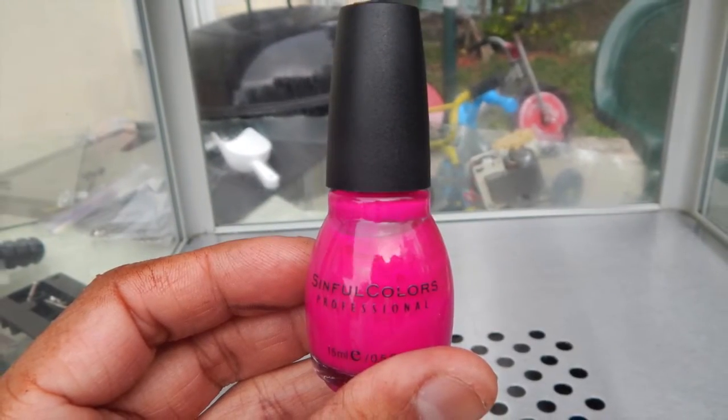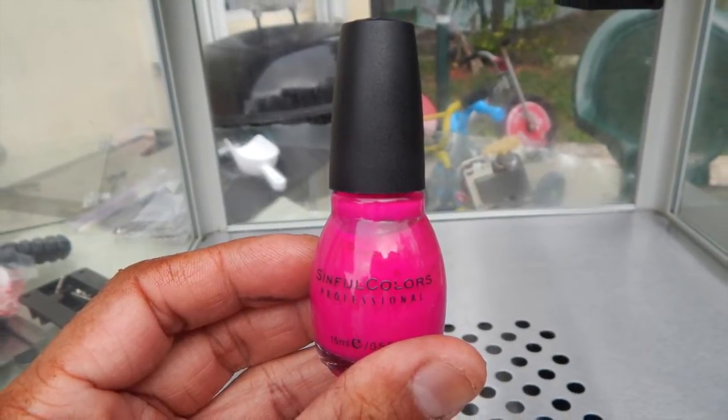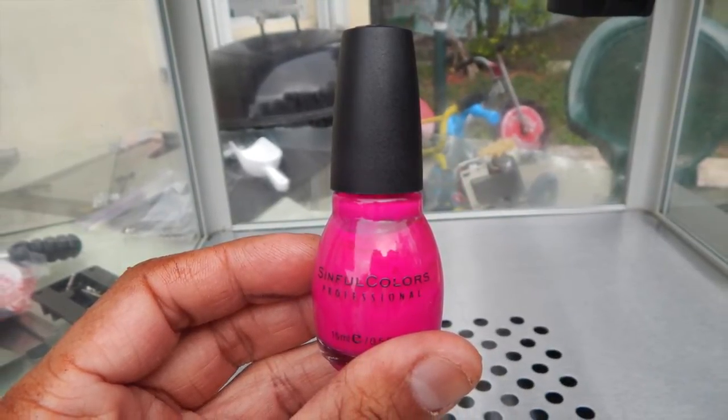Then commandeer some nail polish from your wife or girlfriend. You'll use this to mark your new holes for drilling. Affix your kettle onto the machine and align the sprockets together. Now carefully mark your holes where you'll be drilling.